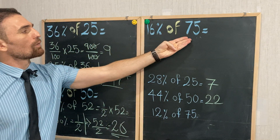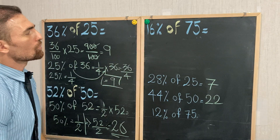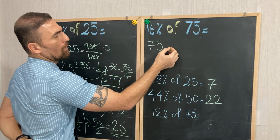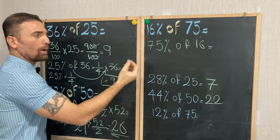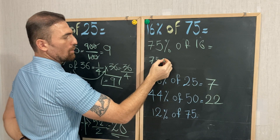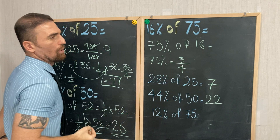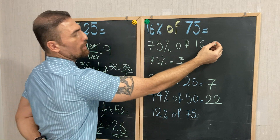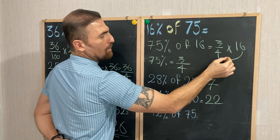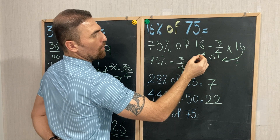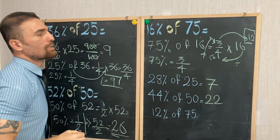The last example: 16 percent of 75. As you know, in percentage we can swap the positions of the two numbers, so it becomes 75 percent of 16. But what is 75 percent? 75 percent is the same as 3 over 4. So we calculate 3 over 4 of 16: first 16 divided by 4 equals 4, then 4 times 3 equals 12. That is the answer.